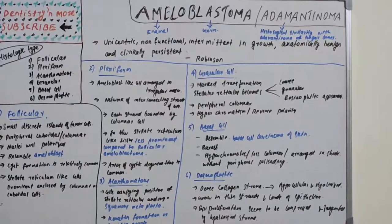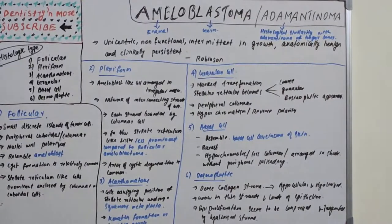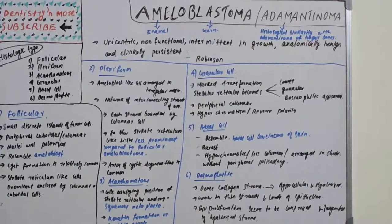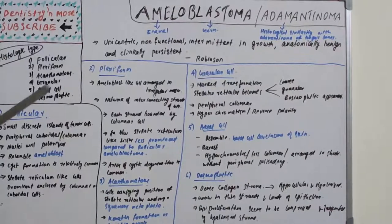Follicular type: small discrete islands of tumor cells with peripheral cuboidal or columnar cells; nuclei are polarized and resemble ameloblasts (the enamel-forming cells). Cyst formation is relatively common, with stellate reticulum-like cells prominently enclosed by columnar or cuboidal cells.